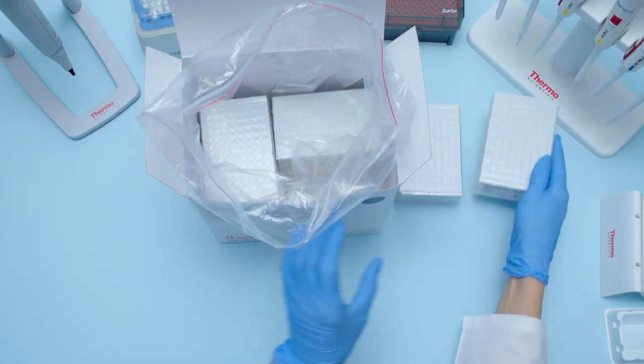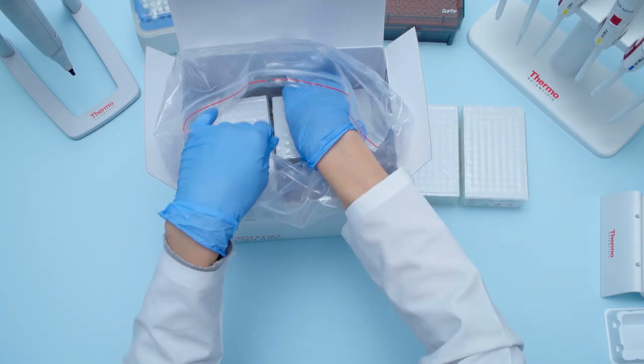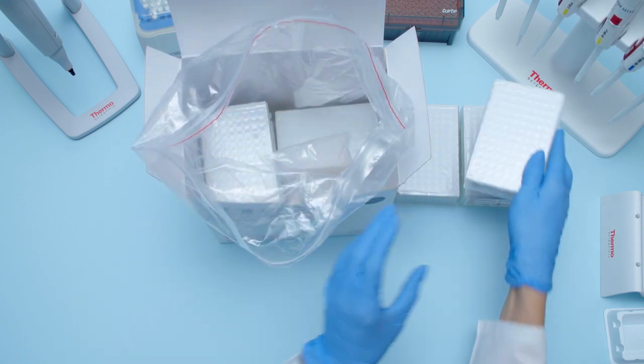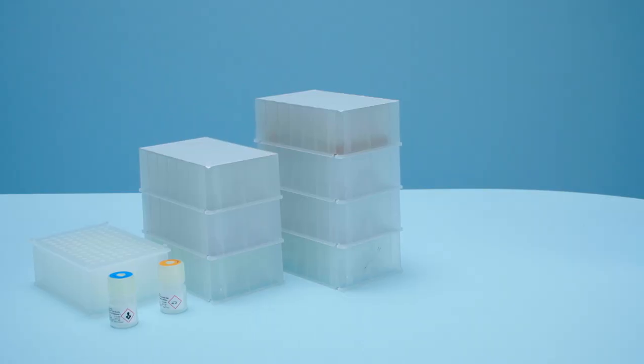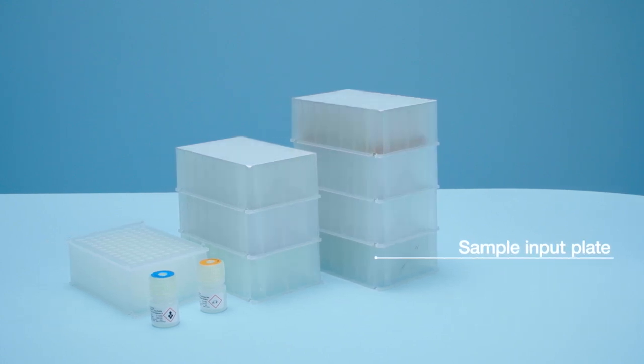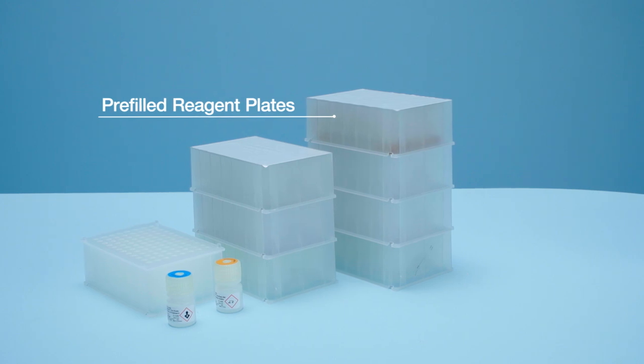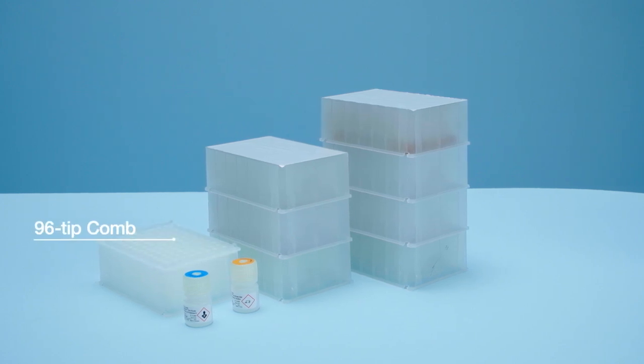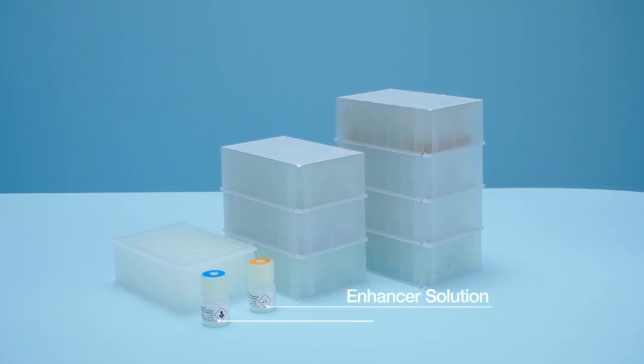The Kingfisher FlexReady DNA Ultra 2.0 Pre-Filled Plate Kit comes with everything you need for a Kingfisher instrument run: one empty 96-well sample input plate, six Pre-Filled Reagent Plates, one 96-tip comb, a bottle of Enhancer, and a bottle of Protease K.